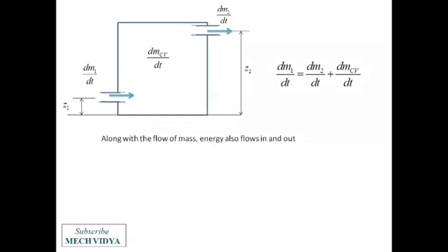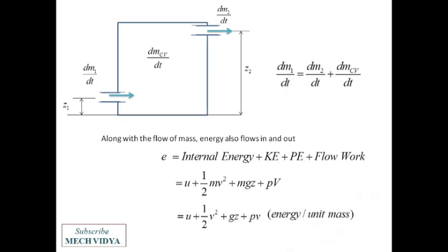Now along with the mass flow, energy will also flow in and out of the system. Where there is mass, there has to be some energy. Now this energy will be the sum total of internal energy, kinetic energy, potential energy, and flow work, the flow work that we have learned just a few minutes back. So if I express all these things mathematically, internal energy can be expressed in terms of u, kinetic energy half mv square, potential energy m into g into the elevation, plus flow work p into v. Now if I have to express this equation per unit mass, then I will divide this entire thing by mass. So the m will go and we will be left out with u plus half v square plus gz plus p into small v. Please see that small v is specific volume, volume divided by mass.